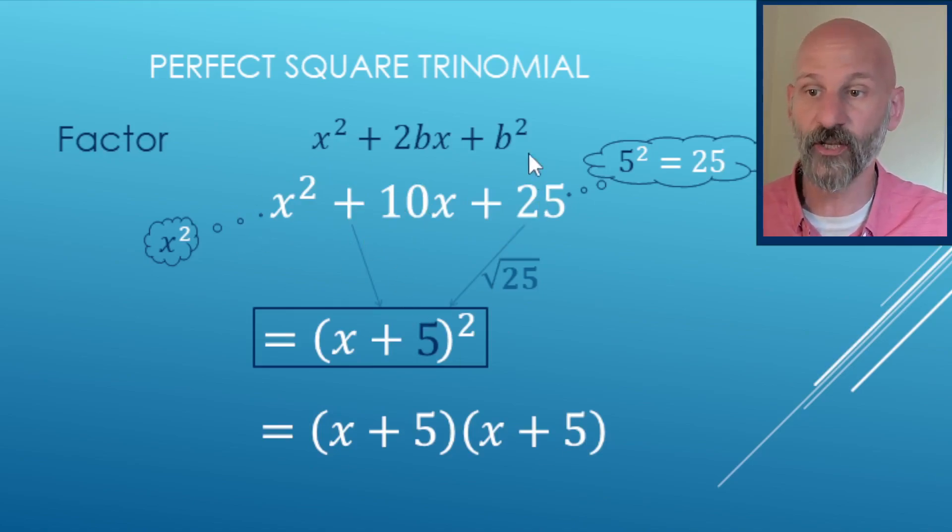So again, if you start with a square, you end in a square, you're most likely going to have a perfect square trinomial. So your answer will look like this. You just have to remember that this sign here matches this sign here.